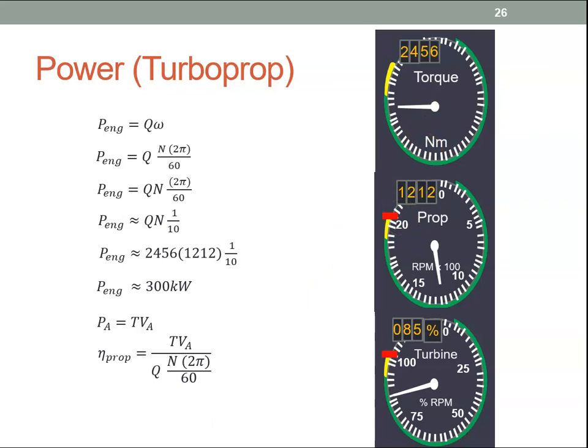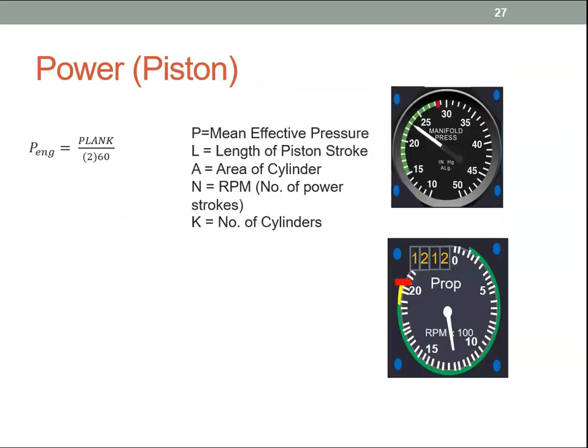Now, for a piston engine, the power produced by a piston engine for a four-stroke piston engine is this equation here. So it's the mean effective pressure by the length of the stroke, the stroke by the cross-section area of the cylinder, by the number of RPMs, by the number of cylinders, and that's all divided by 2 times 60.